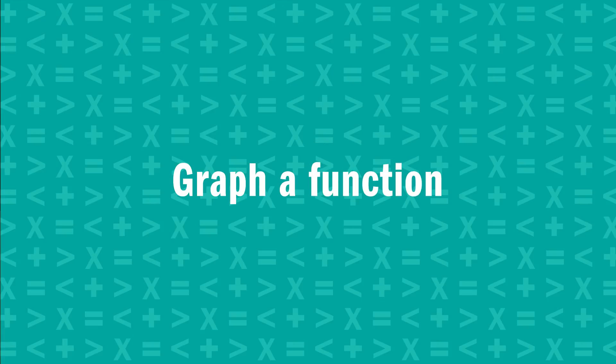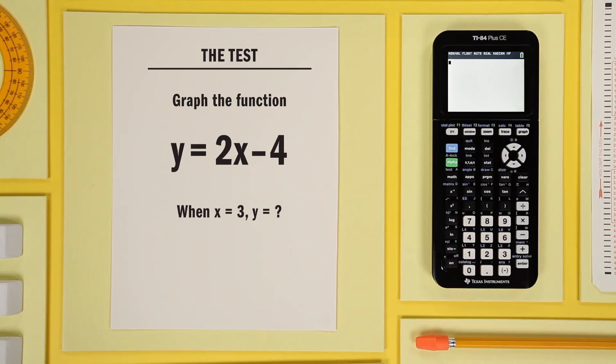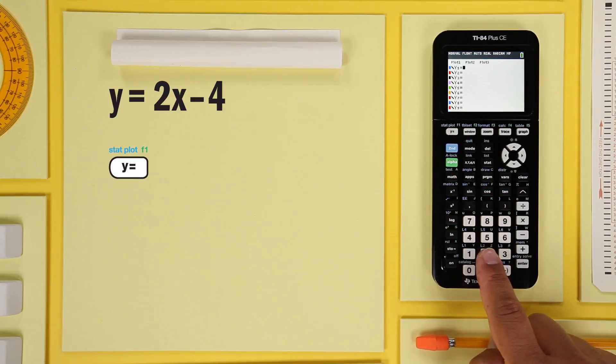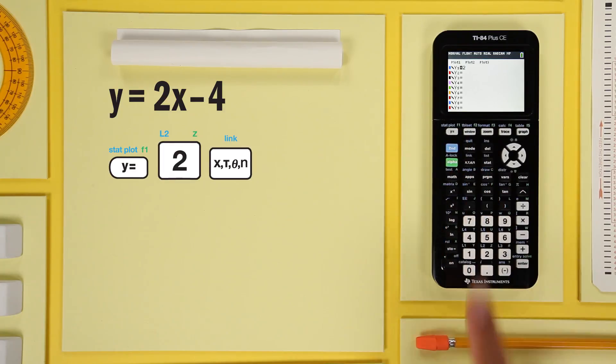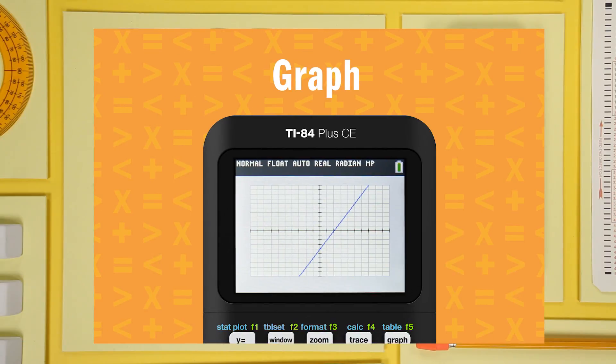Now, let's get an example of something you might see on the test. Let's graph a single function, y equals 2x minus 4. Start with the y equal key. Then press 2x minus 4. Now graph the function by pressing graph. This is what your graph should look like.